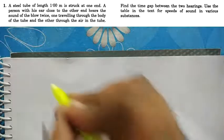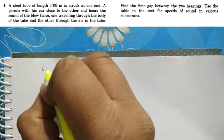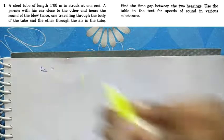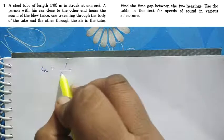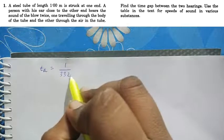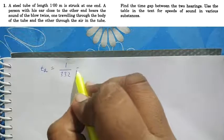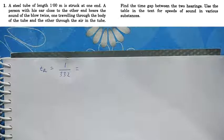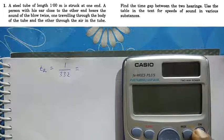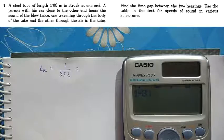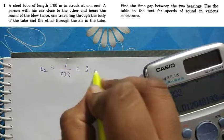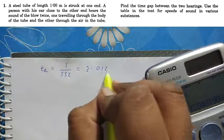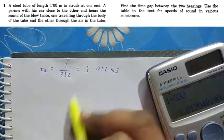So in this question, the time by air will be distance by speed of air, which is 332 meters per second. Distance by speed, this time comes to be 1 by 332, and that is 3.012 milliseconds.